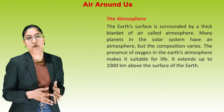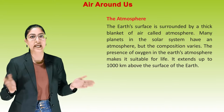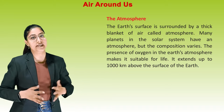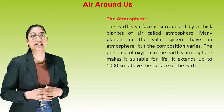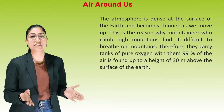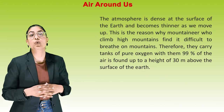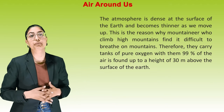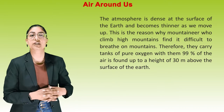The atmosphere: the earth's surface is surrounded by a thick blanket of air called atmosphere. Many planets in the solar system have an atmosphere but the composition varies. The presence of oxygen in the earth's atmosphere makes it suitable for life. It extends up to 1000 km above the surface of the earth. The atmosphere is dense at the surface and becomes thinner as we move up. This is why mountaineers who climb high mountains find it difficult to breathe, and therefore carry tanks of pure oxygen with them.